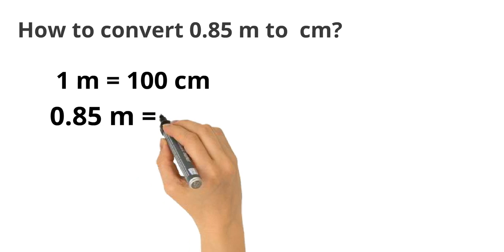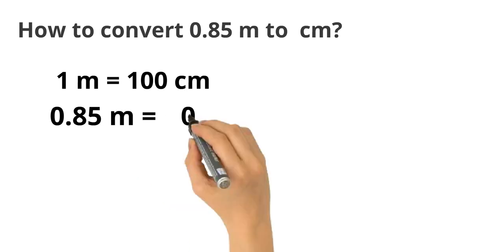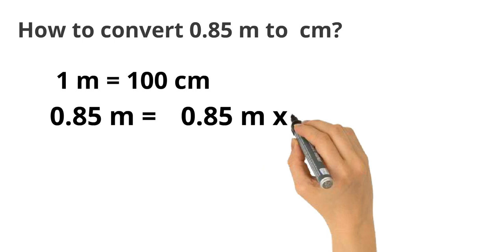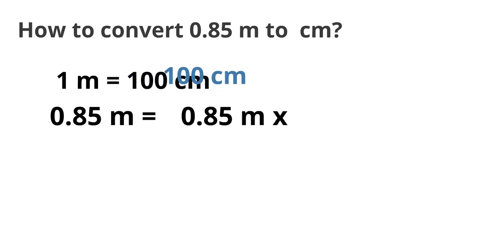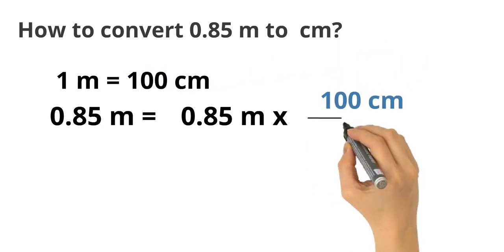0.85 meter equals to 0.85 meter multiplied by 100 cm divided by 1 meter.